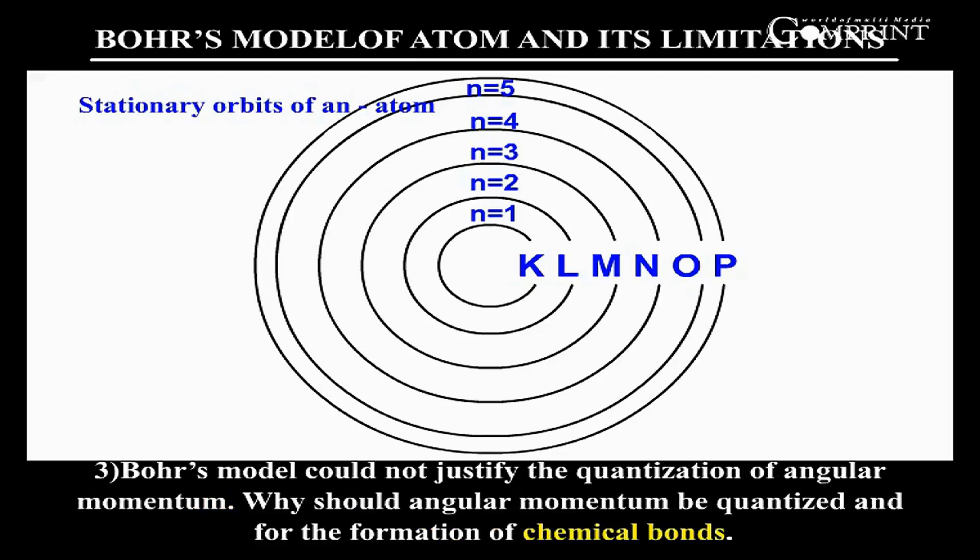Bohr's model could not justify the quantization of angular momentum. Why should angular momentum be quantized and equal to nh by 2π, where n equals 1, 2, 3, and so on? Bohr's theory could not account for the formation of chemical bonds.